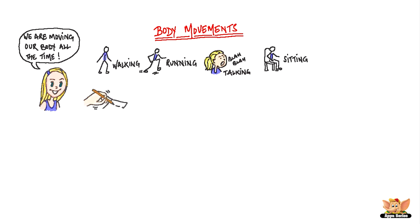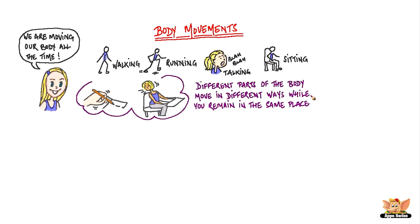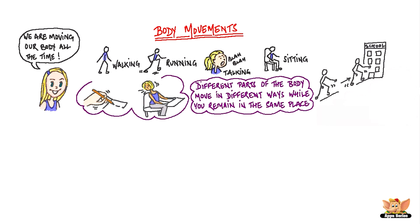You move a part of your body when you write in your book. You move a part of your body when you turn around to talk to your friend. Different parts of the body move in different ways while you remain in the same place. You also move from one place to another — walk out of school to go home, run to catch a ball in the playground and jump over the gate just for fun.